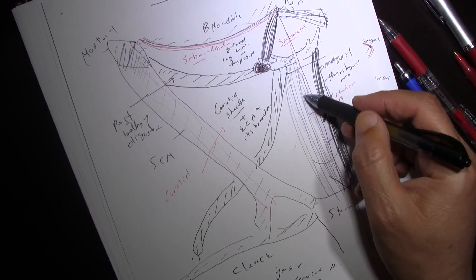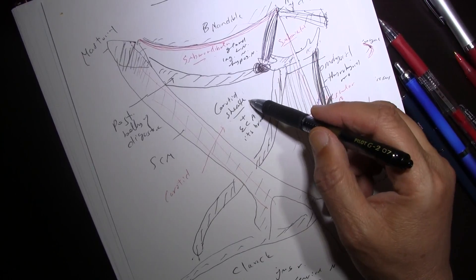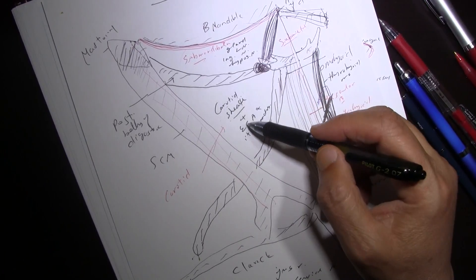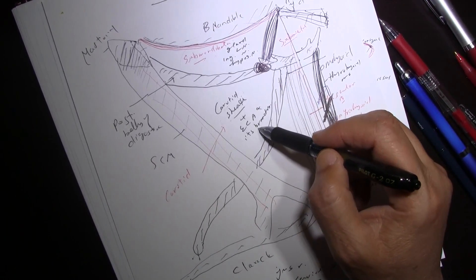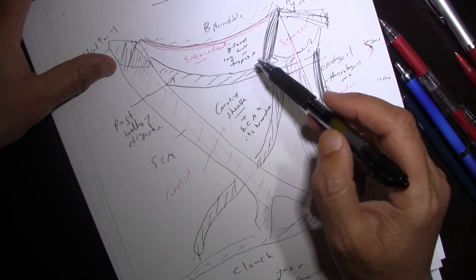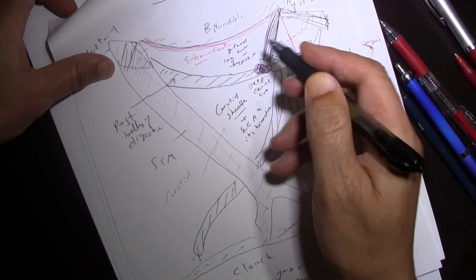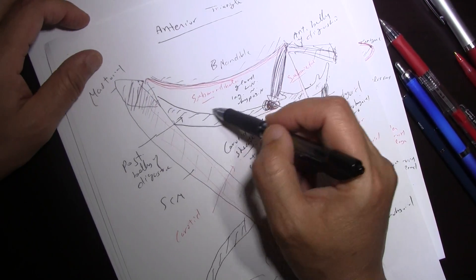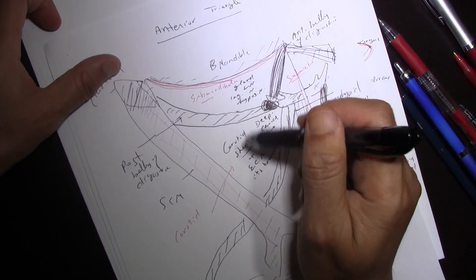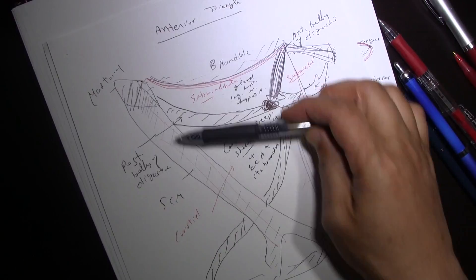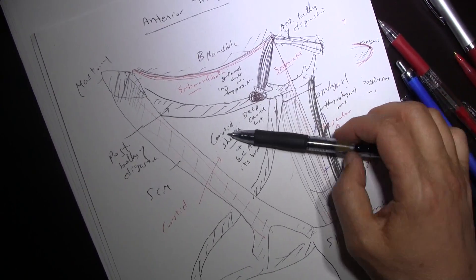The contents of the anterior triangle include: the muscular triangle has infrahyoid muscles covering the viscera of the neck, which includes the trachea, esophagus, thyroid gland, pharynx, and larynx. The carotid triangle contains the carotid sheath, which holds the internal jugular vein, internal carotid artery, and common carotid artery; outside the sheath is the external carotid artery and its branches, plus deep cervical lymph nodes. The submandibular triangle contains the submandibular gland, hypoglossal nerve, and related structures. In the next video we'll cover the detail of the carotid triangle.